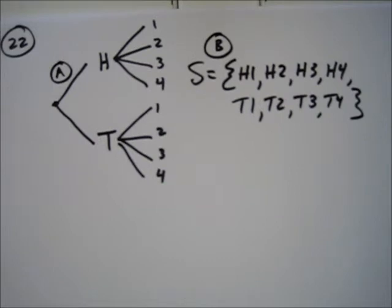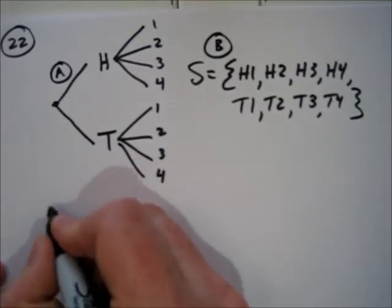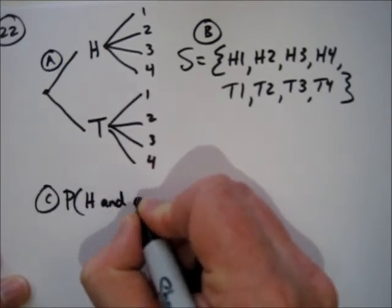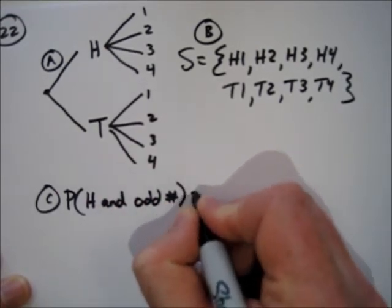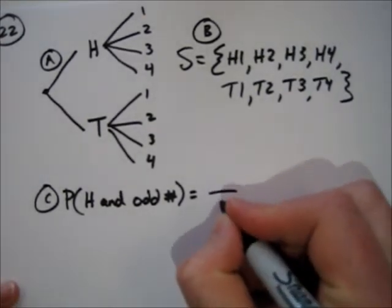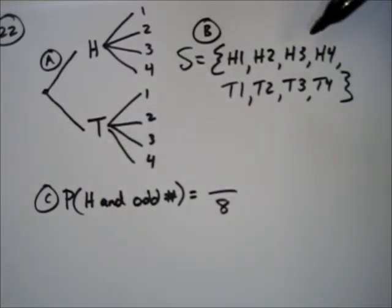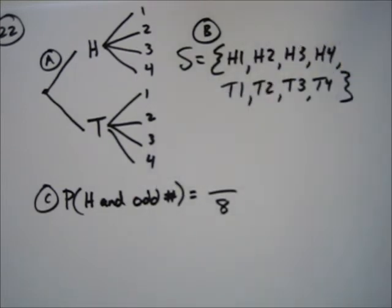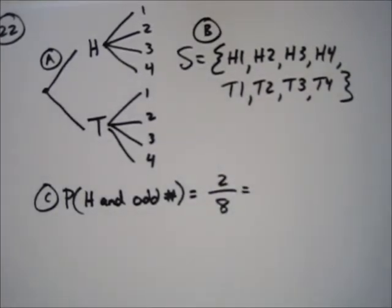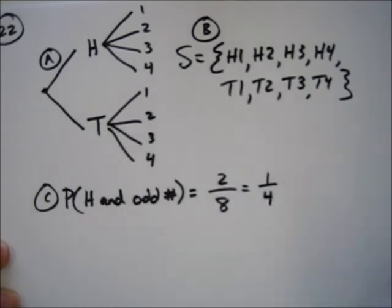Part C asks us to determine the probability that a head is flipped and an odd number is selected. Looking at the sample space, there are eight items, so that's the denominator. Two of them meet the required conditions: heads followed by 1, and heads followed by 3. So two out of eight meet the requirement, and two-eighths reduces to one-fourth.